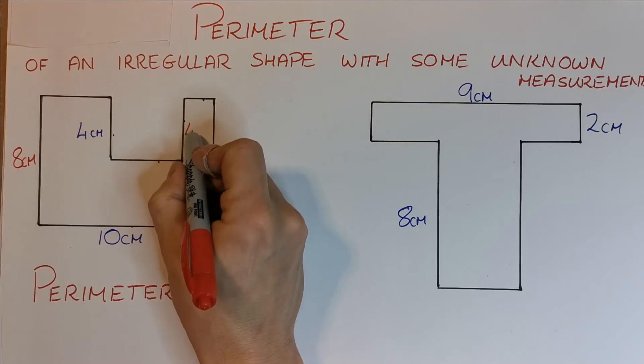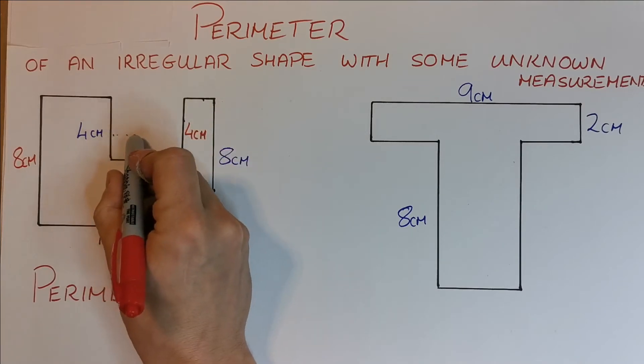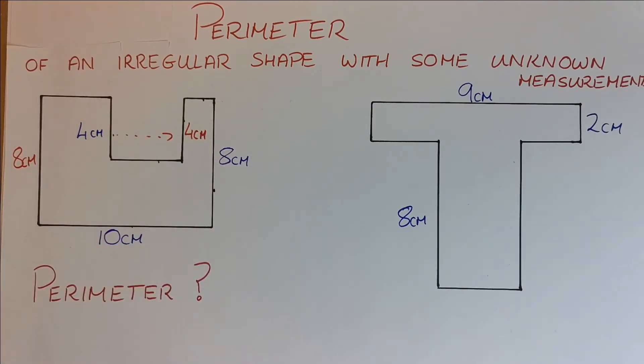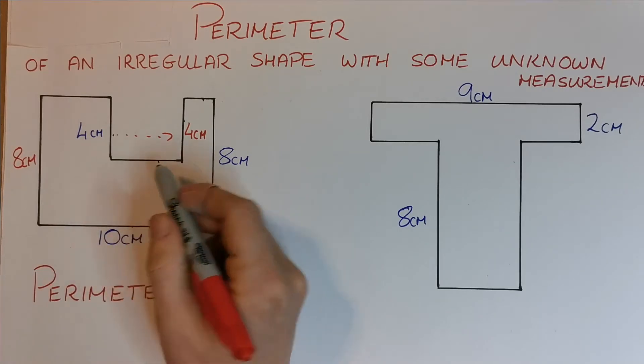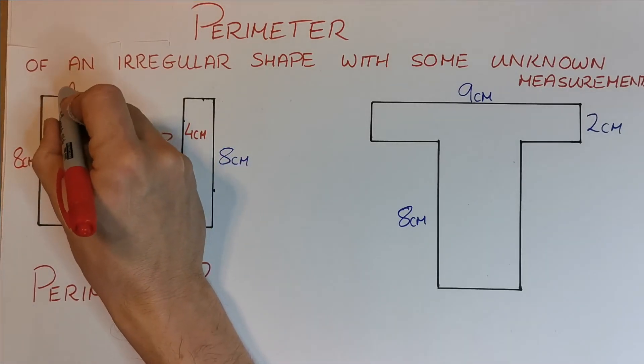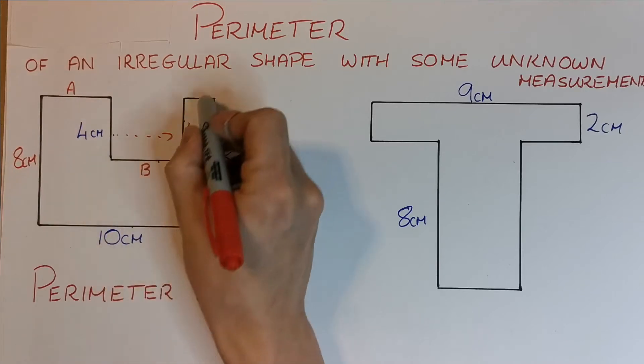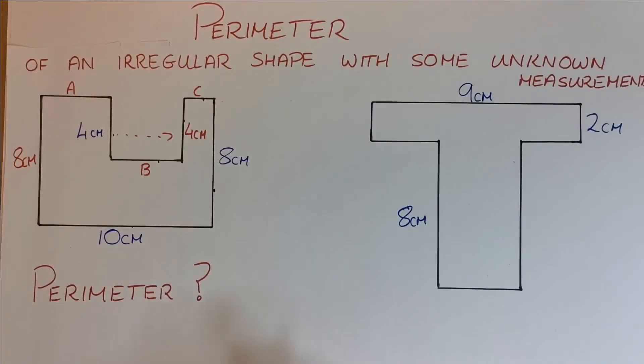Now this length here must be 4cm because it's across from this one. Now these ones seem very hard to get, I don't know these ones. So let's call this length A and this length B and this length C. Now I don't need to do this, but just to help you understand, I can't find out A, B and C.